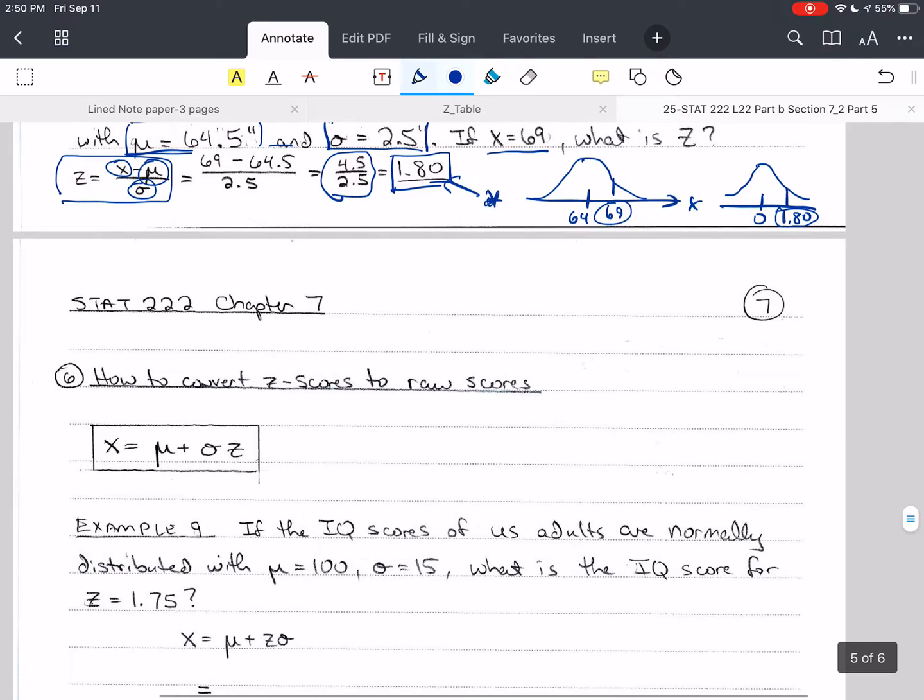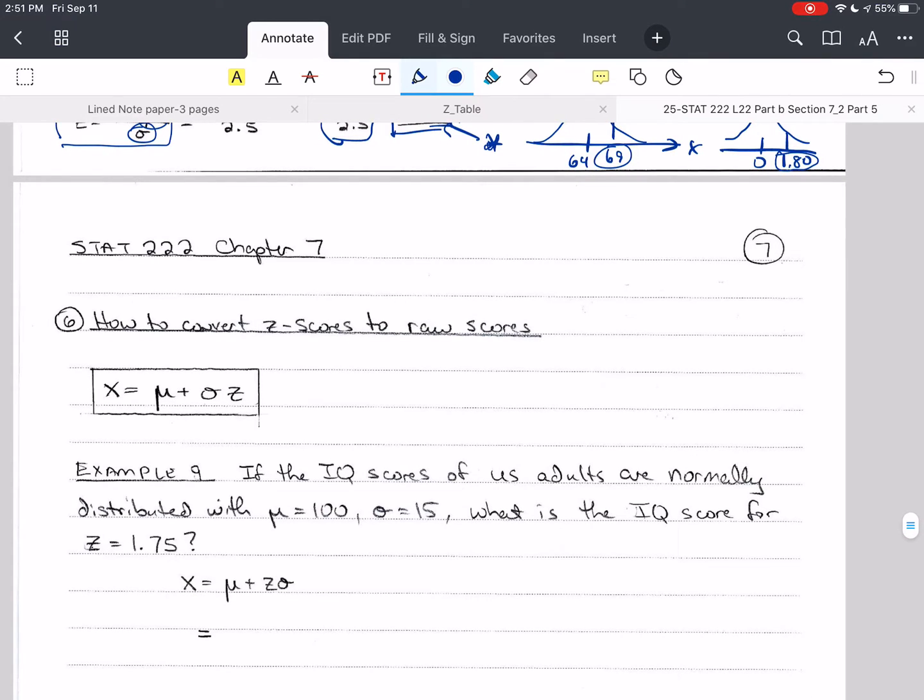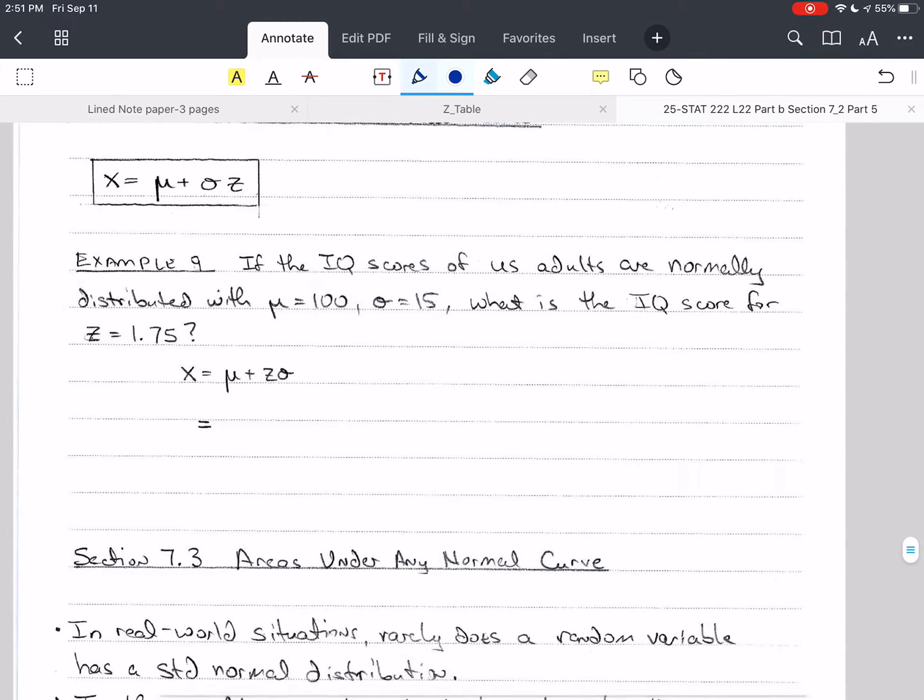So how do we convert z-scores to raw scores? How do we go backwards? If I've given a z-score, how do I make that into a raw score? Well, I have to know mu and sigma to do that. So let's look at the IQ scores. The IQ scores of U.S. adults are normally distributed with a mean of 100 and a standard deviation of 15. What is the IQ score that goes with the z of 1.75?